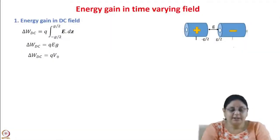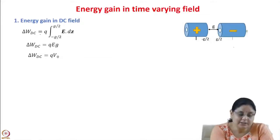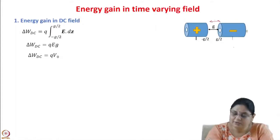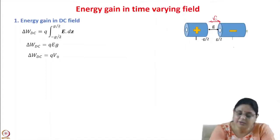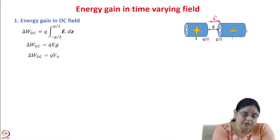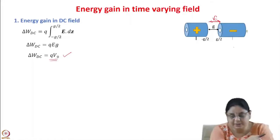Let us calculate the energy gain in the time varying field. As you already know, let us say we have a DC field. The energy gain in the DC field can be calculated by simply integrating Q into the integral of E dot dz over the length of the gap. This is equal to Q into E into G, which is equal to QV₀. The energy gain in a DC accelerator is Q into the voltage seen by the charge particle.